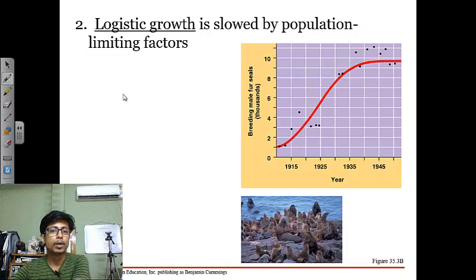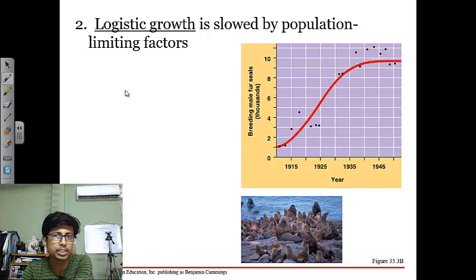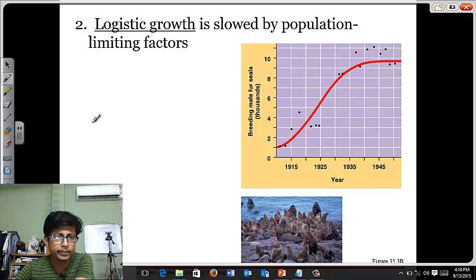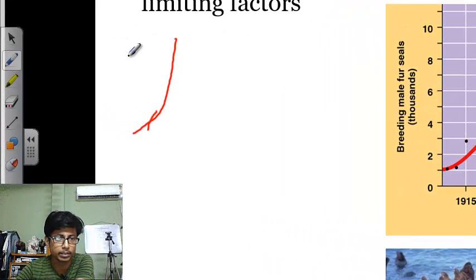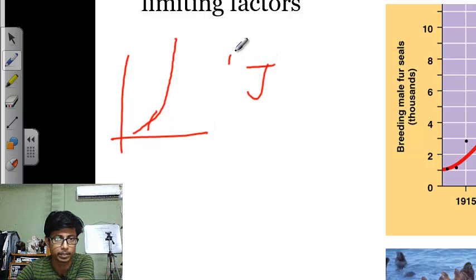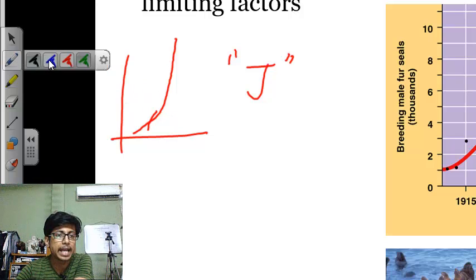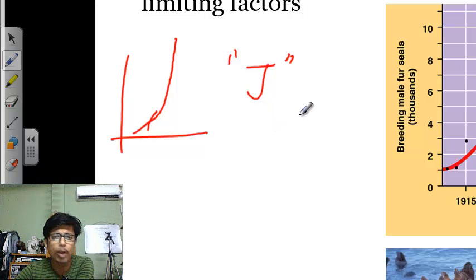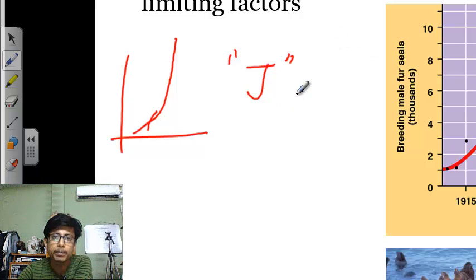Welcome back. In this video we'll be talking about logistic growth. In an earlier video we talked about exponential growth, and I also mentioned that exponential growth is not always possible in nature because environments have a capacity — food availability, water availability, habitat availability — all these things are limited. Those limiting factors determine that individuals cannot grow rapidly and exponentially all the time.